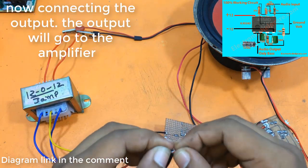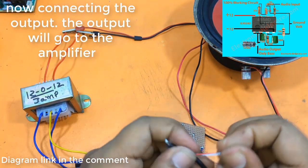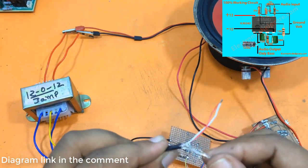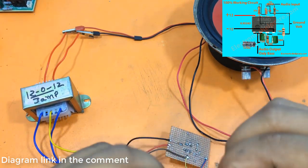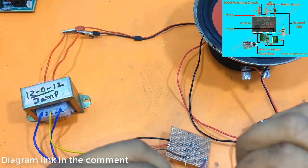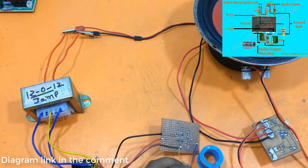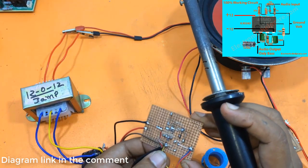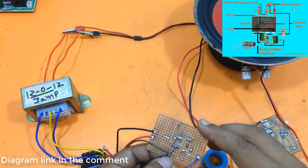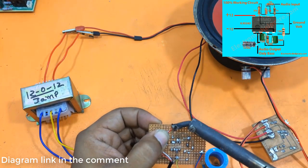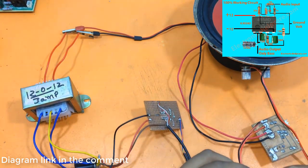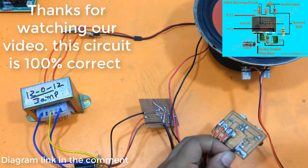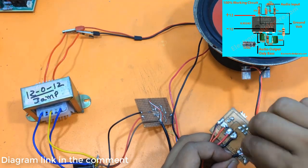Now connecting the output. The output will go to the amplifier. This circuit is 100% correct.